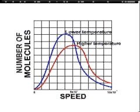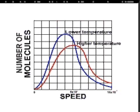This graph shows the distribution of molecular speeds for a particular gas at two different temperatures. Notice that the most probable molecular speed, given by the peak of the curve, increases as the temperature increases.